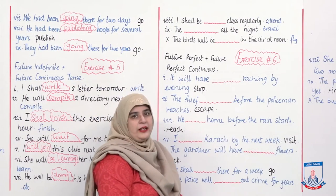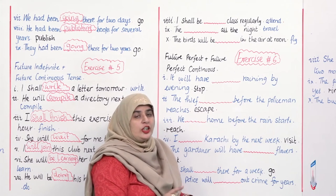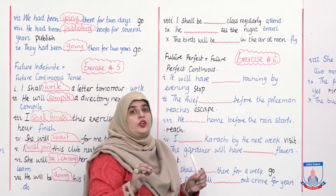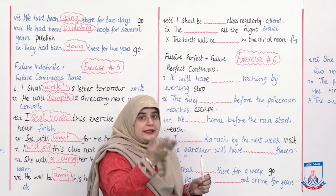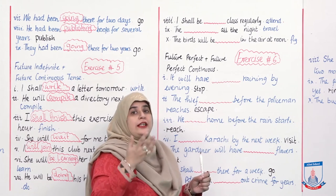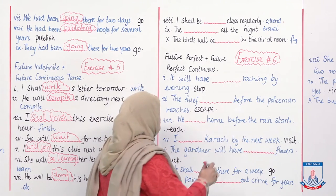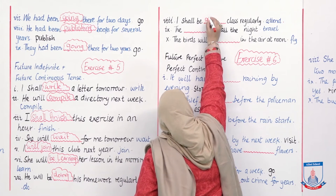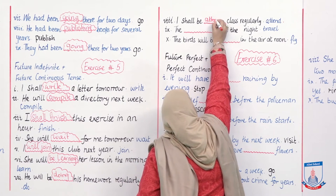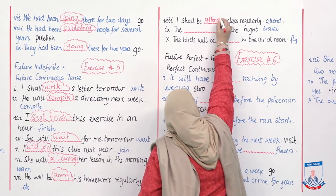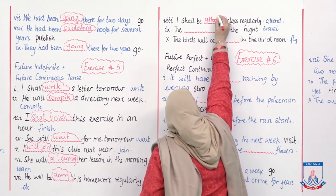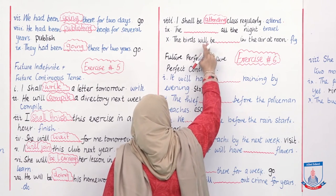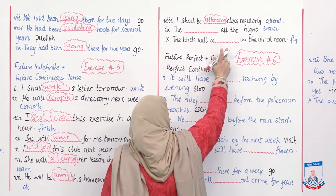'I shall be ___ class regularly.' This is something you are going to do on a regular basis — you will keep on doing it. Answer: 'I shall be attending class regularly.'